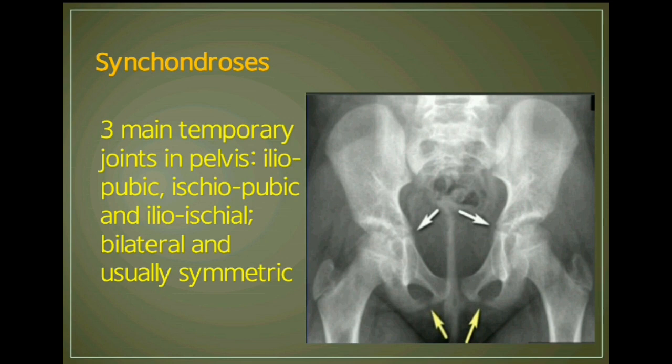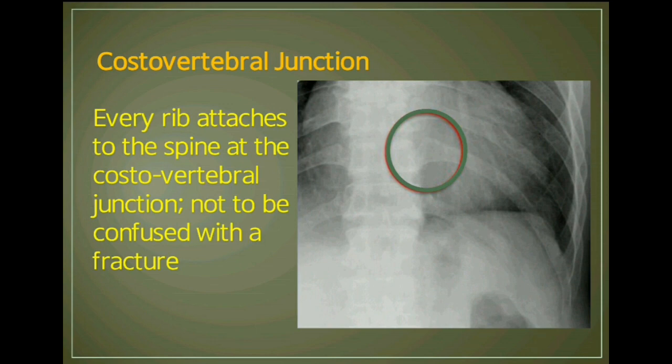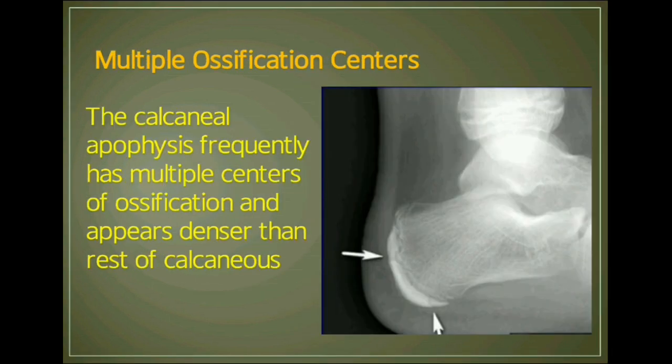Synchondrosis: there are three main temporary joints in the pelvis — iliopubic, ischiopubic, and iliosacral — which are bilateral and usually symmetric. Costo-vertebral junction: every rib attaches to the spine at the costo-vertebral junction and should not be confused with a fracture. Multiple ossification centers: the calcaneal apophysis frequently has multiple centers of ossification and appears denser than the rest of the calcaneus.